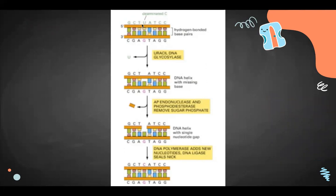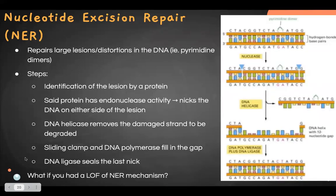After removing the abasic section, a sliding clamp and DNA polymerase fill in the missing nucleotide. DNA ligase then seals the nicks to ensure the DNA backbone has no breaks. This mechanism is shown in the diagram: the deaminated nucleotide's uracil is removed to form an abasic nucleotide, the two enzymes cleave the backbone leaving a gap, DNA polymerase fills in the correct nucleotide, and DNA ligase seals it.